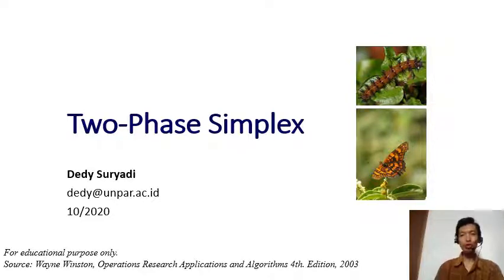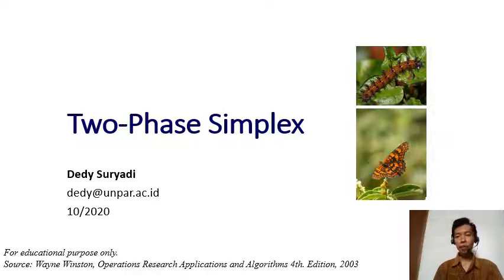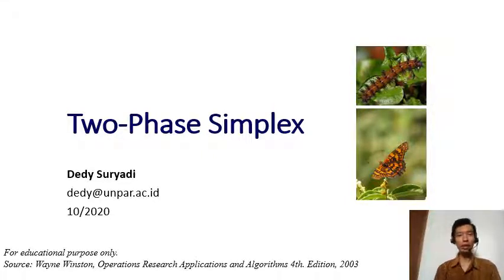We have seen the Big M method, which we may use to solve linear programming problems that have greater-than-or-equal-to or equality constraints. But Big M is not the only method. In this video, I'm going to introduce another method called the two-phase simplex method. The reason people propose this method is that with Big M, it's sometimes difficult to determine how large M should be, especially when using computer software where you must specify a number. Two-phase simplex overcomes that disadvantage because you do not need to specify M at all.